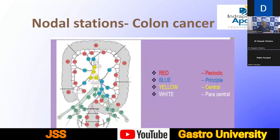The nodal drainage of the colon varies. Close to the colon are the pericolic nodes. Then there are intermediate nodes, and then central lymph nodes near the origin of the vessels supplying these structures. The most distal are the periotic lymph nodes, which are the most distal nodes where the spread of lymph nodes occurs.